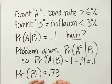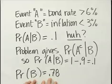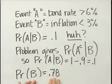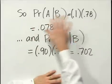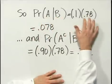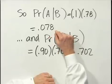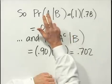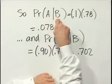Putting in the last probability we need — the unconditional or marginal probability of event B — that is the probability that inflation will be below 3%, given in the problem as 78% or 0.78. So the probability of A and B is simply 0.1 times 0.78, which equals 0.078, or 7.8%. This is the probability that bond returns will be above 6% even though inflation is below 3%.